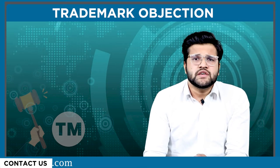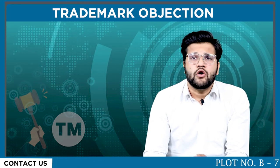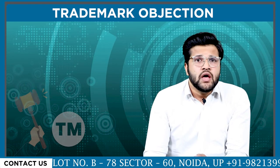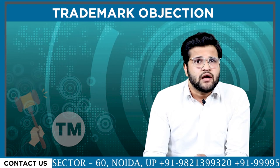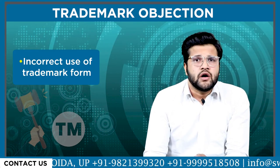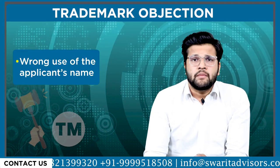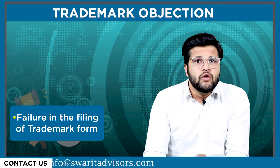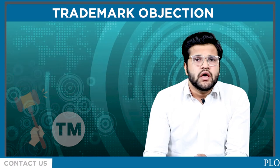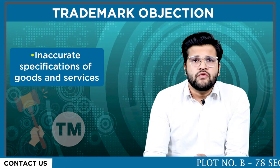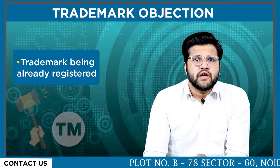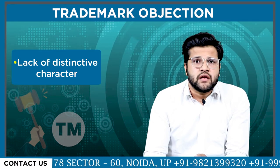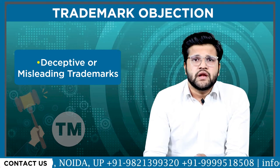So now let's discuss about the grounds of trademark objections. An application for trademark registration can face objections like incorrect use of trademark form, wrong use of the applicant's name, failure in the filling of the trademark form, false address on the trademark application, inaccurate specification of goods and services, when the trademark is already registered, lack of distinctive character, and deceptive or misleading trademarks displayed.